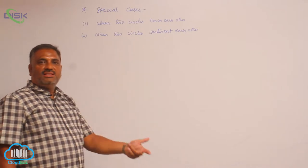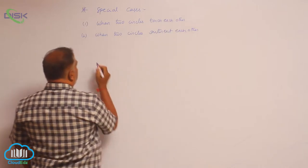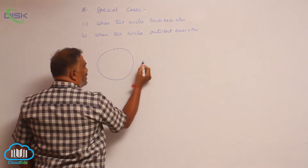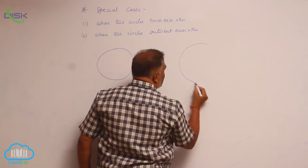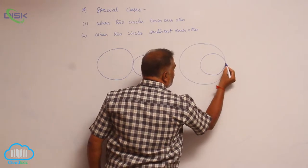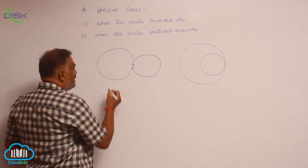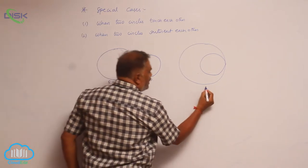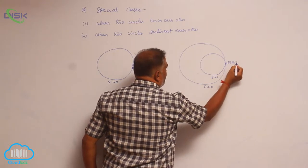We will discuss the radical axis in special cases. Suppose when two circles touch each other — in case 1, the two circles can touch each other externally or internally. You are able to see very clearly, this is the point P(x1, y1). This point lies on S = 0 and S' = 0, the two circles.